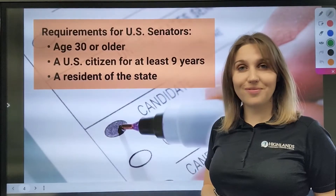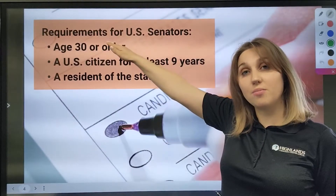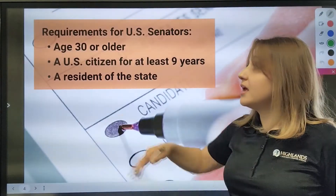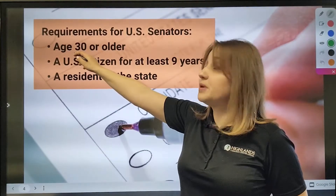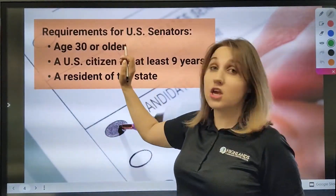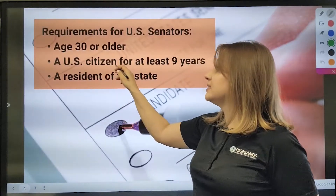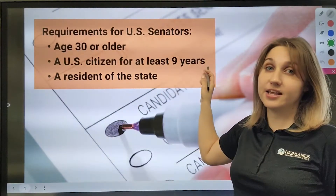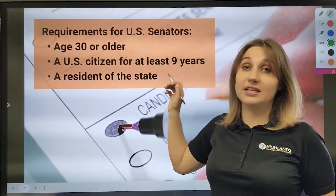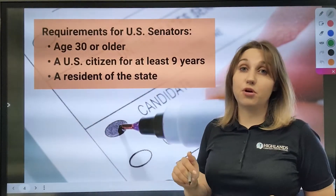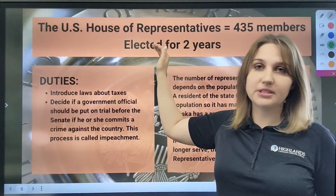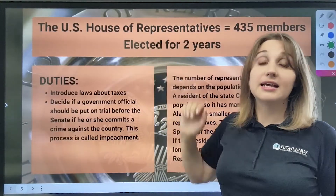Now let's take a look at the requirements for US senators. Number one, he or she has to be 30 years of age or older. Number two, he or she must be a US citizen for at least nine years. And that person must be a resident of the state that they represent.